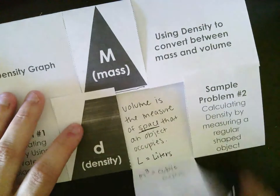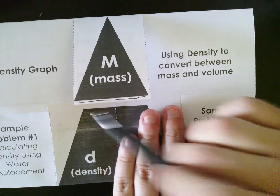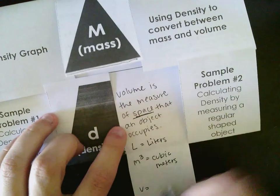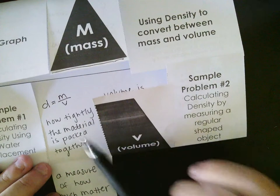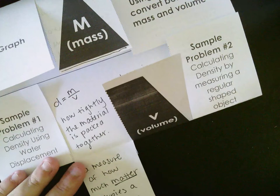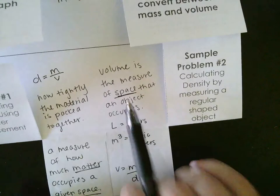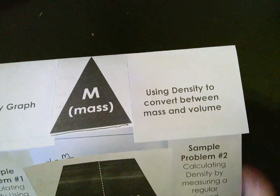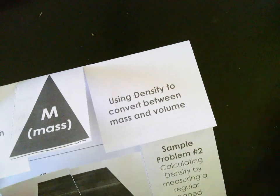Now let's see what our equation for finding volume would be. Going back to my math triangle, I cover up volume and I see mass over density. So volume equals mass divided by density. When I'm looking at density, I'm talking about how tightly packed that material is — how much matter occupies a given space. Notice that matter refers to mass, and space refers to volume. So density is used to convert between mass and volume — that's the 'use density' part from our essential question.